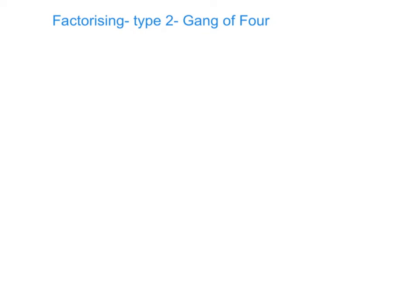Hi guys, so in this video I'm going to explain to you how to factorise type number 2 of algebraic expressions, which is called gang of 4. The name gives it away — when we're asked to factorise the gang of 4, we need to make sure that we do have 4 terms, and that's the first way we're going to go about spotting if it is type number 2.